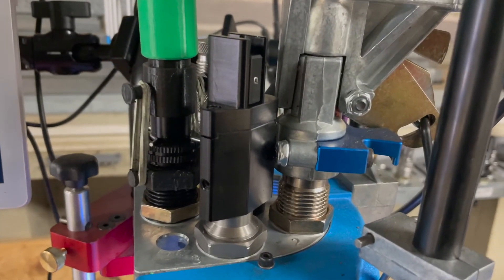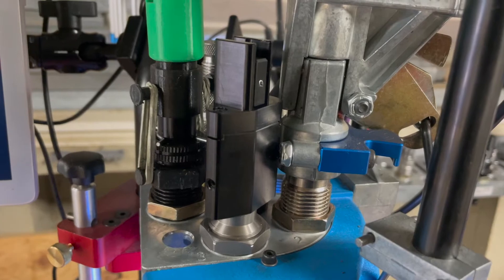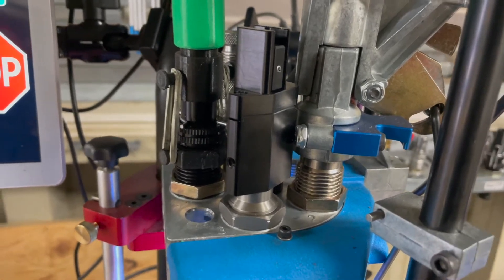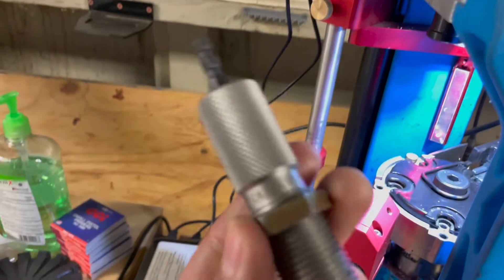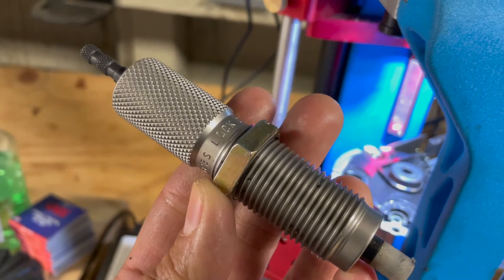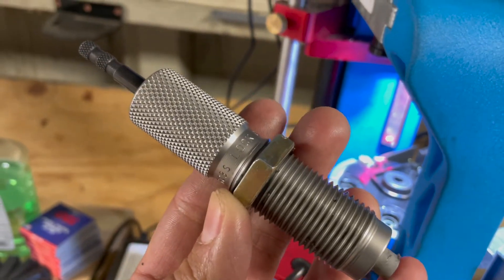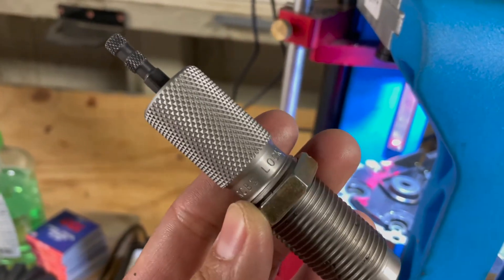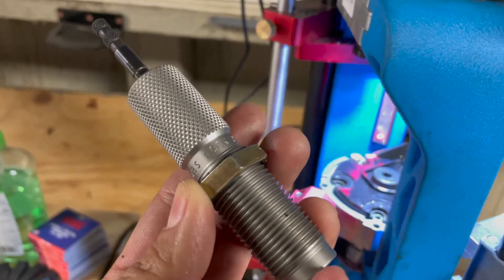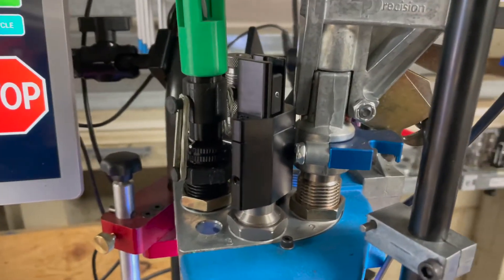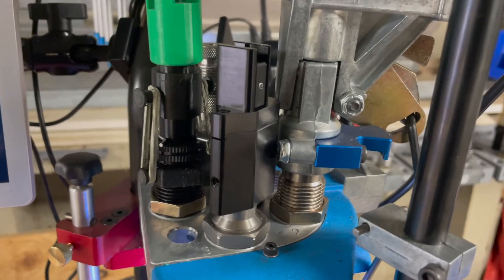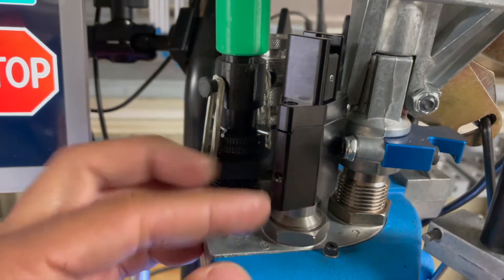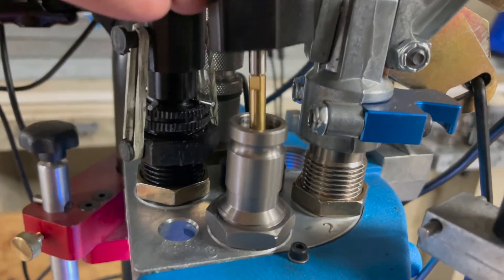This here is the powder check sensor running in station three. In the past I've been using an RCBS lockout die. When there's low powder or double charge, it locks out the press, stops it, works. But I decided to go with this because the way the sensor is designed, you can pull the sensor off and here's just a die.